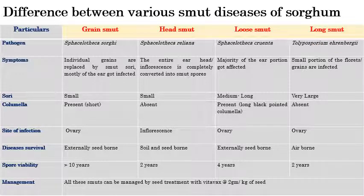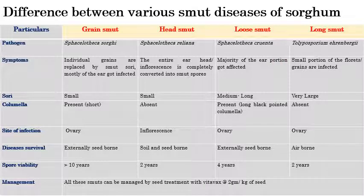In grain smut, grains are replaced by smut spores. In head smut, the entire head or inflorescence is completely converted into smut spores. In loose smut, the majority of the ear portions are affected. In long smut, the florets or grains are infected, and in later stages completely convert into black color powdery masses. The common outcome is conversion into black color powdery masses, completely unfit for consumption.